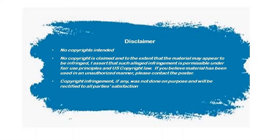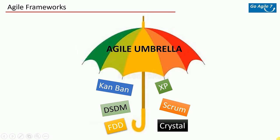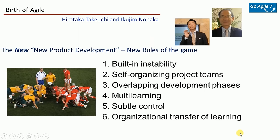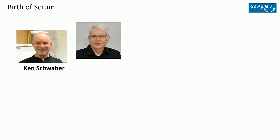Welcome back to Go Agile series part 7. Last time we reviewed Kanban. Today we will review Scrum, another popular agile framework. In a previous episode we talked about the scrummage in rugby and the 'New New Product Development' paper by Hirotaka Takeuchi and Ikujiro Nonaka. In the early 90s, Ken Schwaber and Jeff Sutherland built a software development approach taking some of those original principles and started calling it Scrum.